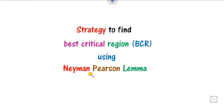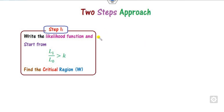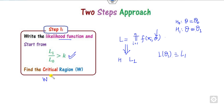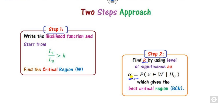I will tell you the two-step approach to use the Neyman-Pearson lemma to find the best critical region. Step 1: define the likelihood function L(θ). Once you define the likelihood function, calculate L at H1 (that is L1) and L at H0 (that is L0 or L2). Step 2: find the critical region W, then use the definition of the level of significance to find the value of K. Whatever value of K you get, that gives you the best critical region.